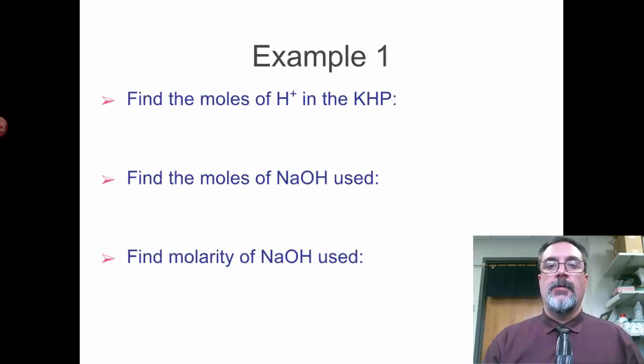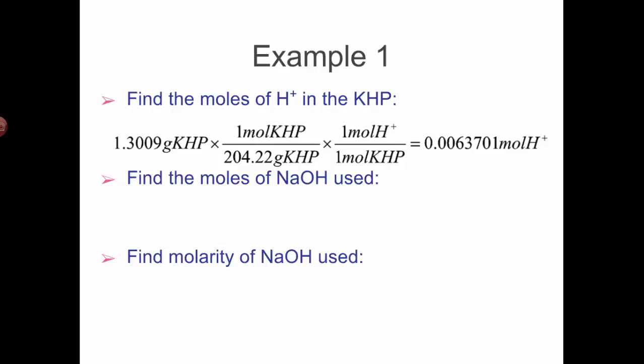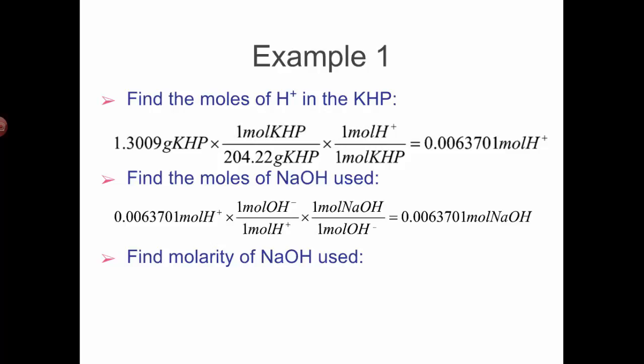First, find out how much H+ is in the KHP based on the mass that we used. How many moles of sodium hydroxide we used - well, it's one to one, so that's easy. We measured out 1.3009 grams, molar mass of KHP is 204.22, and it's one mole of H+ per mole of KHP. So we have 0.006371 moles of H+. It's the same number of moles of sodium hydroxide needed because it's a one to one mole ratio.